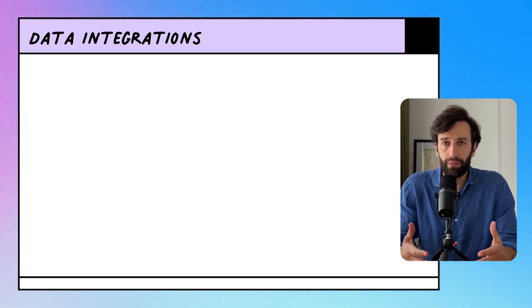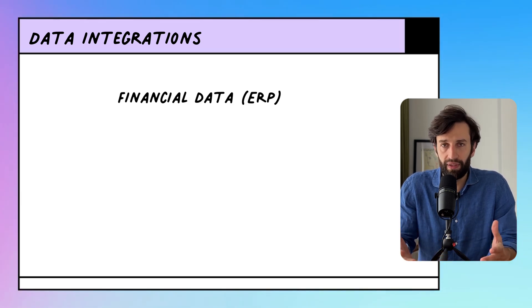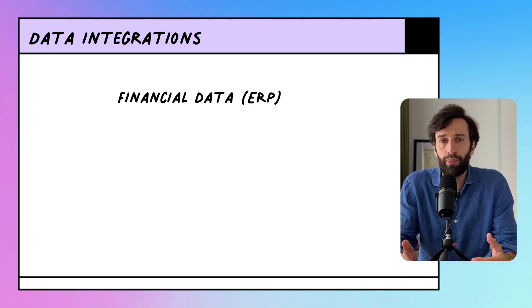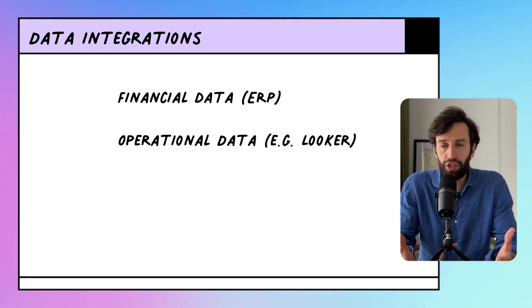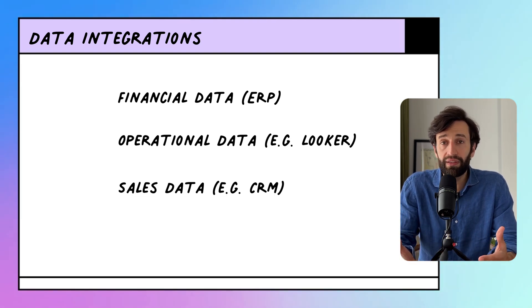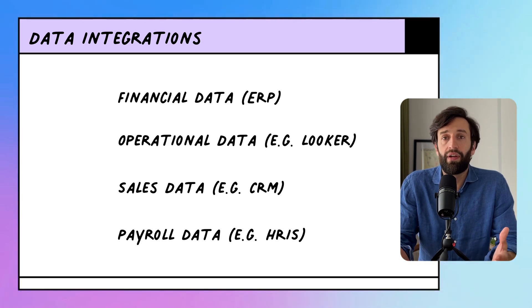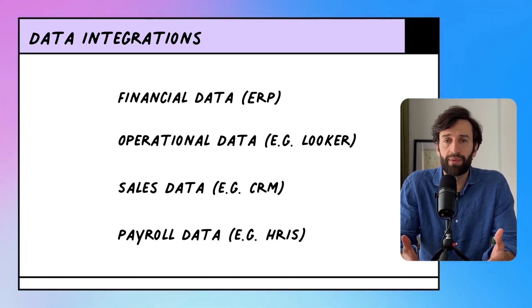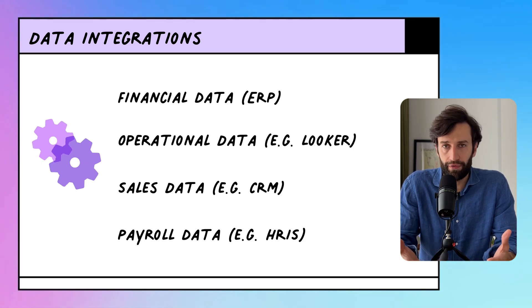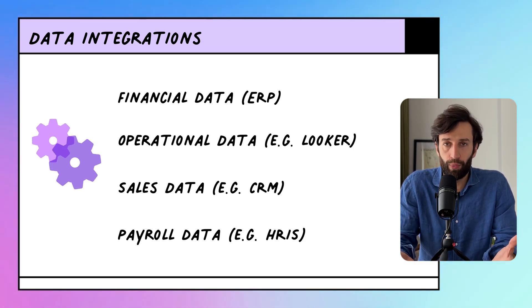You can bring your financial data into Abicom from your ERP and accounting system, but you can also bring in operational data from somewhere like Looker, sales data from your CRM, and even payroll data from your HRS system. As long as Abicom integrates into your data systems, it can automate the process of bringing in fresh data every month and updating all of your reports.